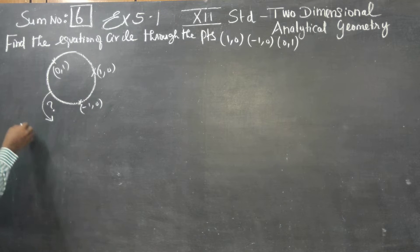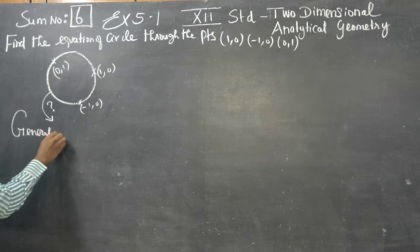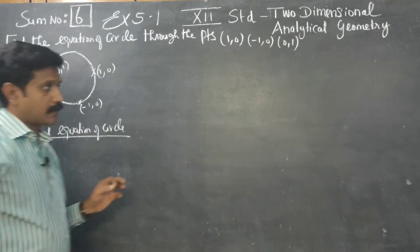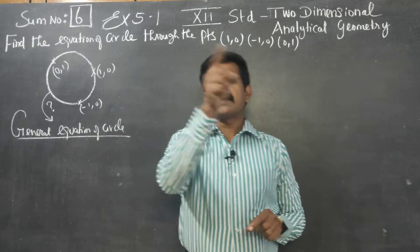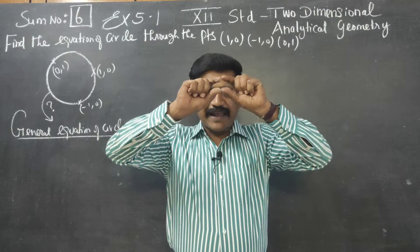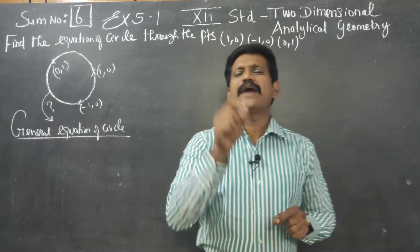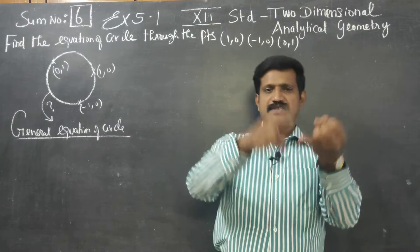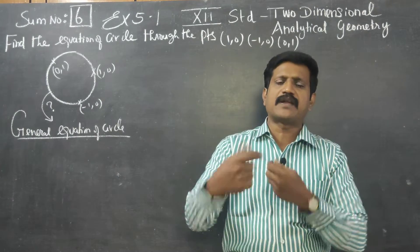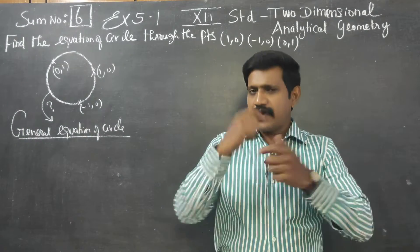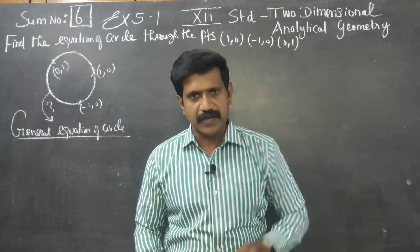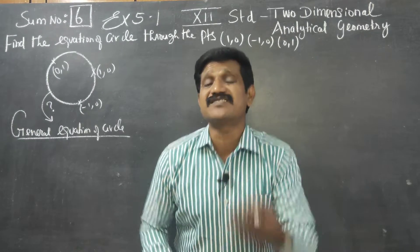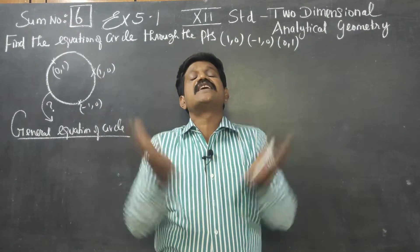First of all, the general equation of a circle. In analytical geometry, one circle is represented by a generalised equation. Just as a straight line has the form y = mx + c, one circle also has its own equation format involving x squared, y squared, and constant terms.